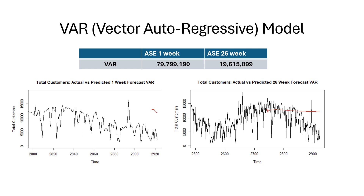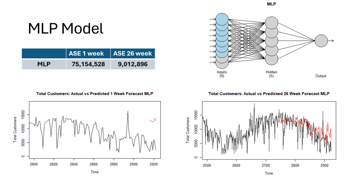We tried a variety of vector autoregressive models taking into account all the explanatory variables. All of them ended up with poor ASE values similar to the one we selected. I believe this is because of the false assumption that all the variables are stationary, which they are not. Next we tried a multi-layer perceptron model. We ended up with a model that has nine input nodes, five hidden nodes, and one output node. The one-week forecast doesn't perform well, similar to the VAR model, but we ended up with our best 26-week ASE at just above nine million, showing the value and potential in multivariate models.